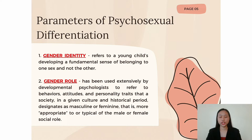Starting off with number one, gender identity refers to a young child's developing a fundamental sense of belonging to one sex and not the other. It is the personal conception of a person regarding what gender they belong to — it's about how you see yourself and identify the gender that you belong with, regardless of sex or physiological parts at birth. The term was simultaneously introduced in the early 1960s by Hooker, a psychologist, and Stoller, a psychoanalyst. Additionally, the measurement of gender identity can be assessed using structured verbal interview techniques.